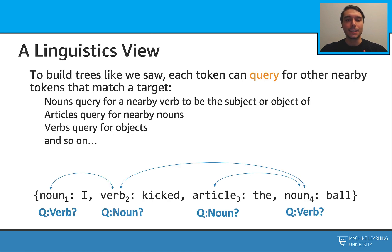The second thing we need to do is create some queries. We need to do that because we are going to be searching for some nearby tokens that match a target. For example, we can create queries for nouns that are going to search for some verbs. We can create queries for articles that will search for some nearby nouns. Or we can create queries for verbs that are going to search for some objects, and it goes on like that.